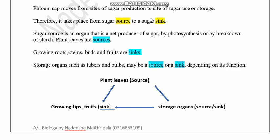The destination of the phloem translocation is known as the sink. Phloem sap normally moves from the site of sugar production — that is from the source — to the site of sugar use or storage, which is the sink. A sugar source is an organ that produces sugar by photosynthesis. The source can also be an area where starch is broken down to produce sucrose.